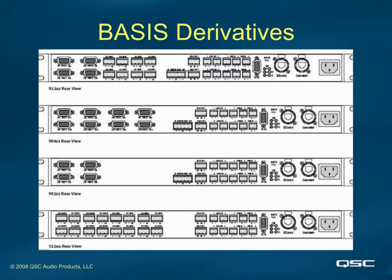Here are four of the eleven different models we now ship. They are all called basis derivatives, but some carry different model names depending on the IO configuration. Note that the only real difference is primarily audio connectivity — does it have analog inputs or not? Does it have data ports or not? And so on.